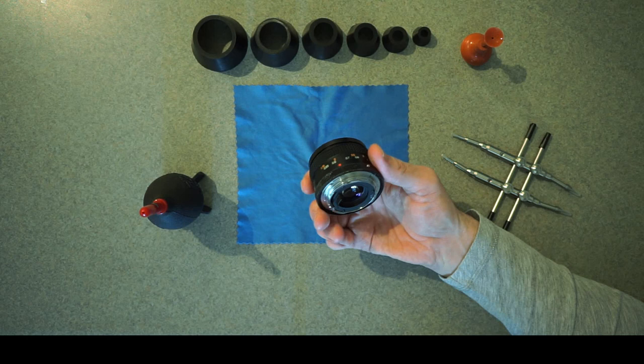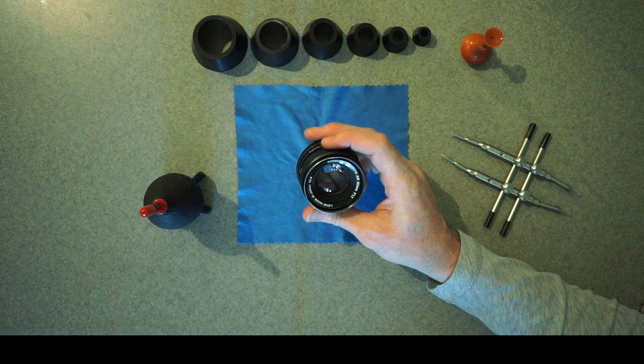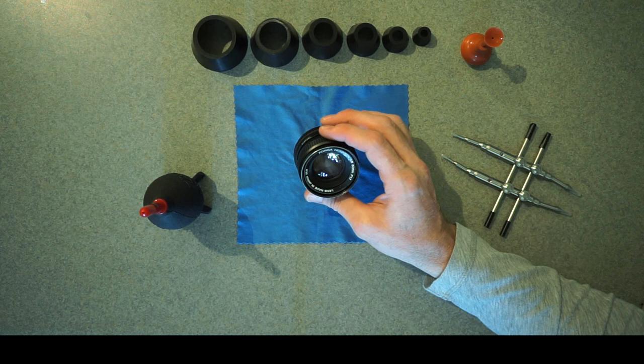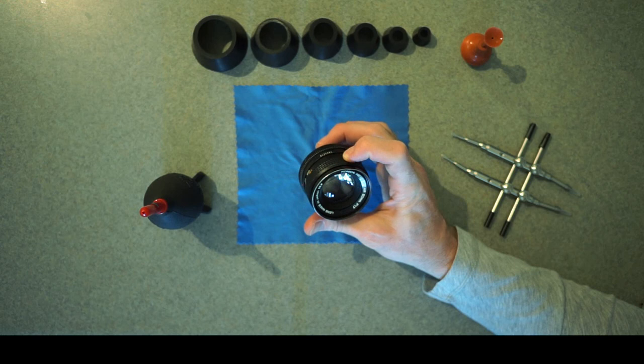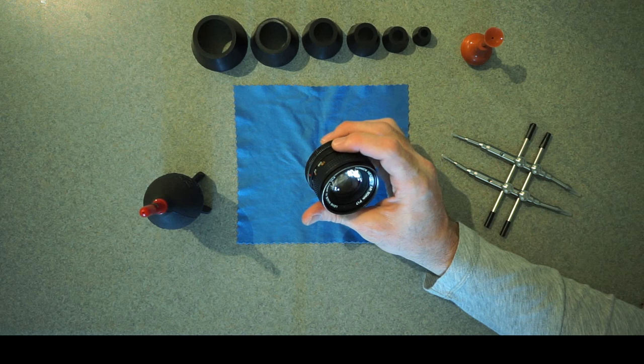One thing about vintage lenses that I've discovered in my travels thus far is that they need a little service after 40 years or so. What happens generally is that dust gets inside them. Also, other things can happen, sort of a fungus or mold type of situation can occur.